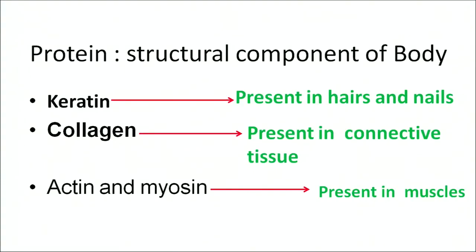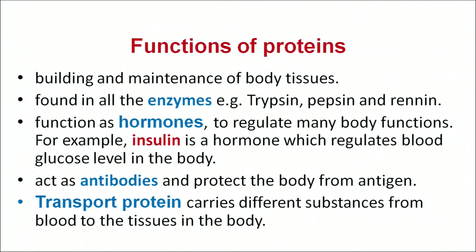Proteins are structural components of the body. Keratin is found in hairs and nails. Collagen is found in connective tissues. Actin and myosin are present in muscles. The major function of protein is in building and maintenance of body tissues. They are found in all enzymes like trypsin, pepsin and renin. They function as hormones and regulate body functioning — for example, insulin is a protein that regulates blood glucose level. They also act as antibodies to protect the body from infections, and transport proteins carry important substances from blood to tissues.